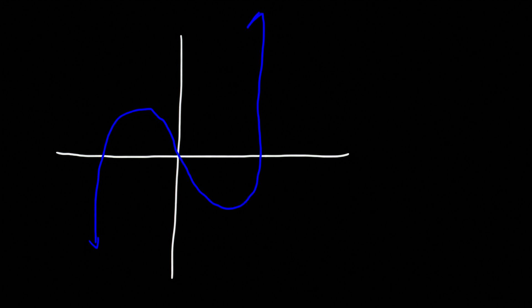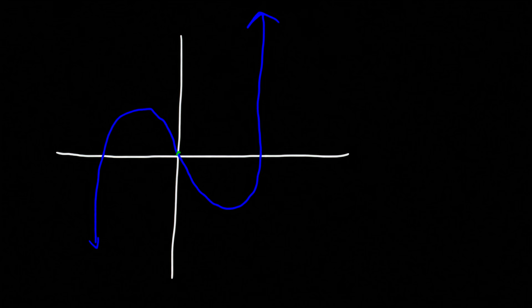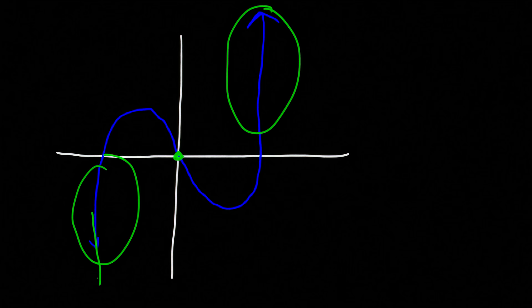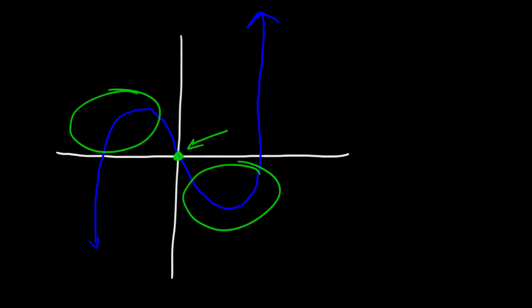Here's another example. Determine if this one is even, odd, or neither. It's not drawn perfectly to scale, so use your good judgment. It's not symmetric about the y-axis — the right side does not look the same as the left side. However, there is symmetry about the origin. Quadrant 1 looks similar to quadrant 3, and quadrant 4 looks like a reflection of quadrant 2. So there's symmetry about the origin, which makes this function an odd function.